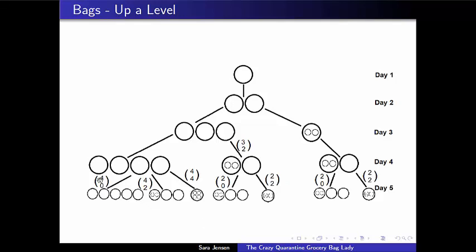You can see that with these binomial coefficients we have a nice pattern going: four choose zero, four choose two, four choose four, two choose zero, two choose two, two choose zero, two choose two, going up by twos. And what's more is that if we go back to every branch now that we have in our tree and we label them, some patterns start to become more clear to us as we're thinking about what the answer is for the number of arrangements of bags on a given day.